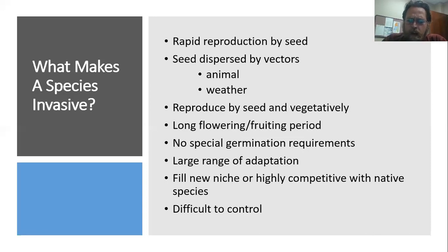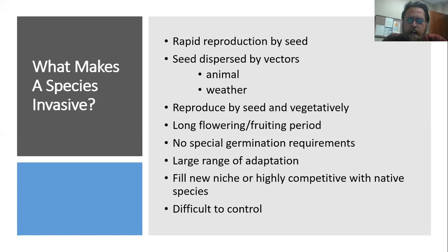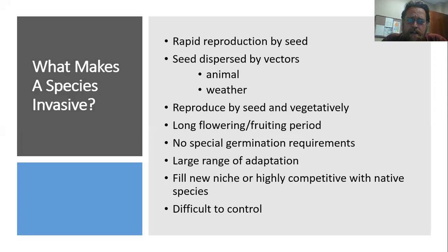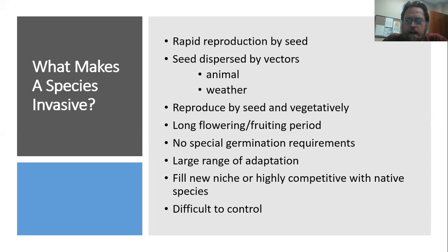These are plants we tend to think of as weeds. A weed scientist would say a weed is a plant out of place. A lot of these plants can be really damaging — either crowding out native species or having other qualities that make them problematic. I'm going to specifically talk about invasive plants in the home landscape today, rather than in forestry or agriculture.